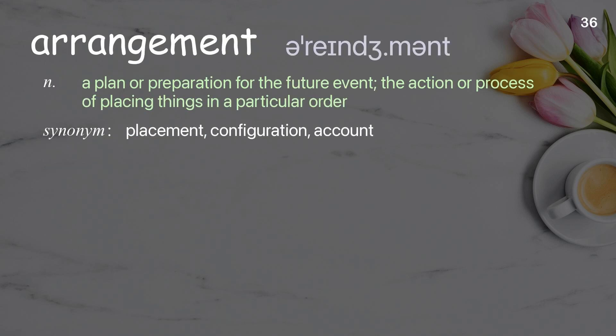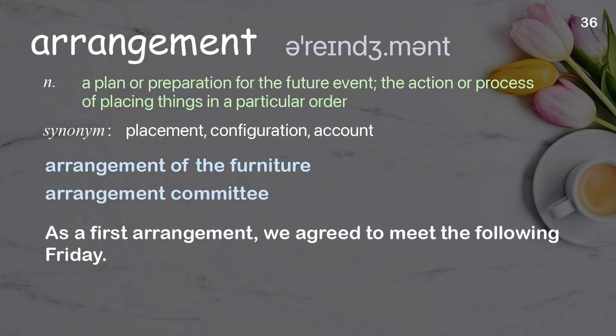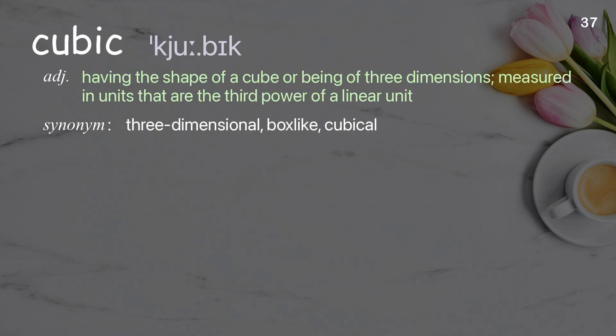Arrangement. A plan or preparation for a future event; the action or process of placing things in a particular order. Examples: Arrangement of the furniture. Arrangement committee. As a first arrangement, we agreed to meet the following Friday.